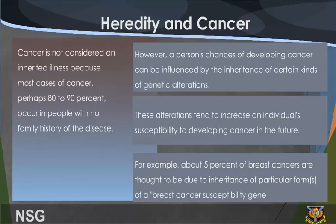Cancer is not considered an inherited illness because most cases of cancer, perhaps 80–90%, occur in people with no family history of the disease. However, the process of developing cancer can be influenced by the inheritance of certain kinds of genetic alterations. For example, about 5% of breast cancers are thought to be due to inheritance of particular forms of a breast cancer susceptibility gene.